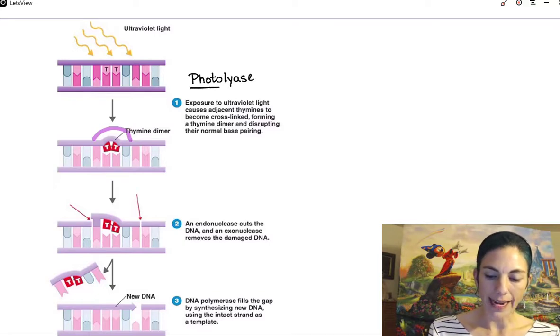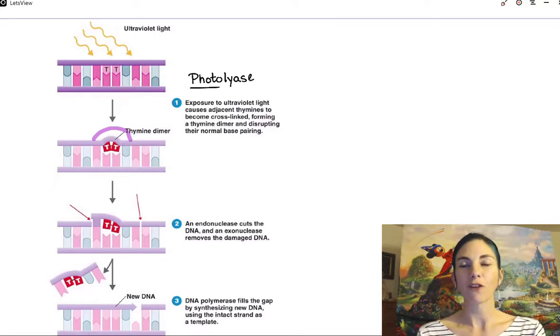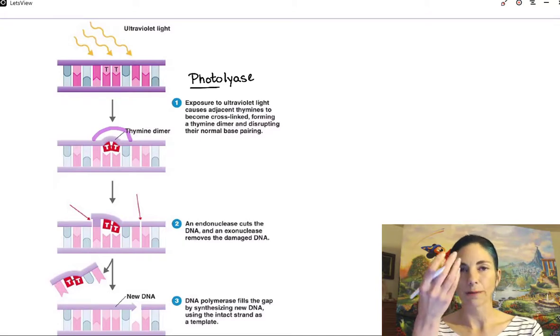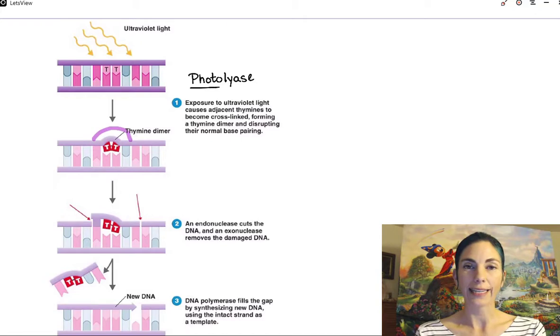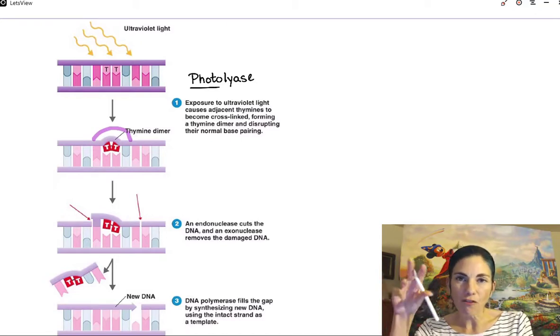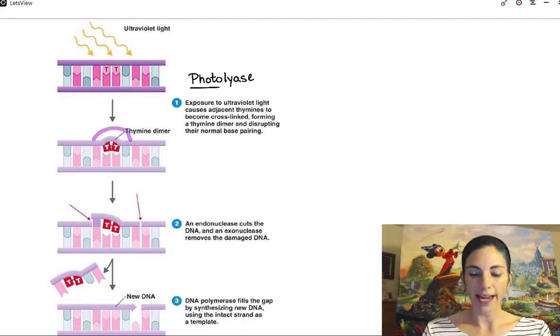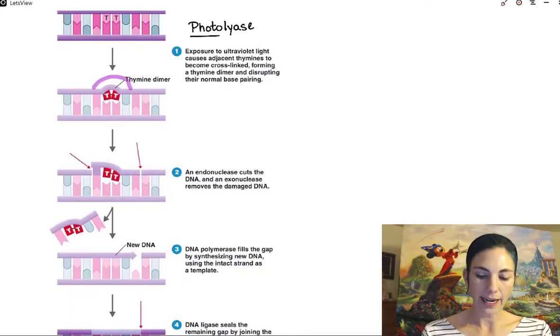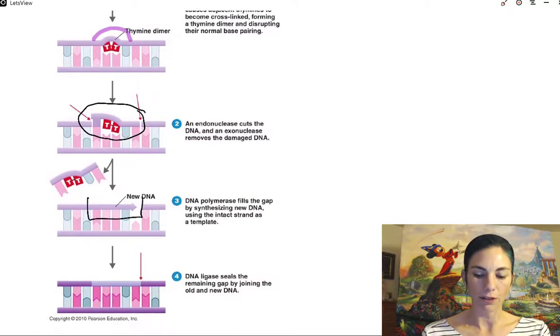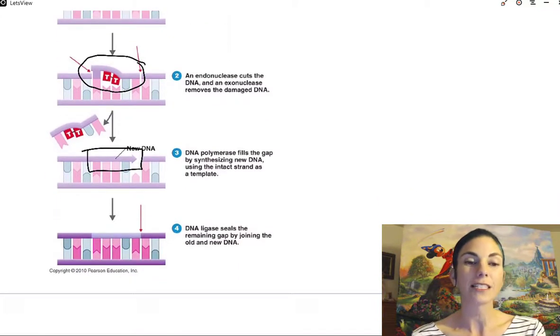And photolyase is responsible for finding and replacing those errant thymines. Now the word photo means light, and lyase refers to ligating, which means cutting and repairing this nucleic acid sequence. So photolyase is going to basically feel along that double helix, find the bulge, and then it's going to go through and cut out the region, and then it's going to replace it with fresh thymine so that there is no mutation that shows up.